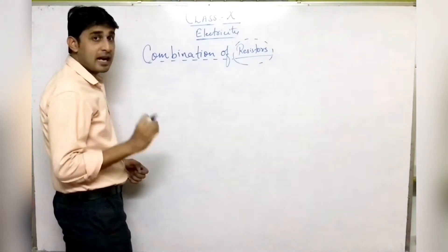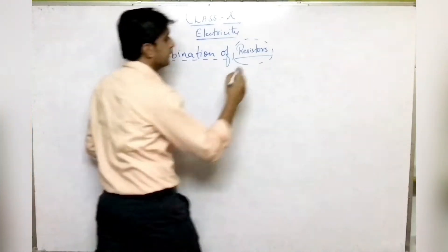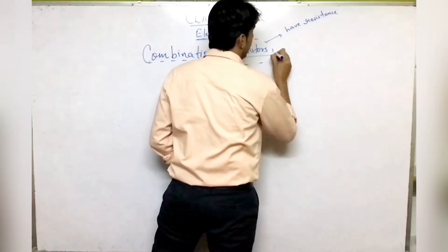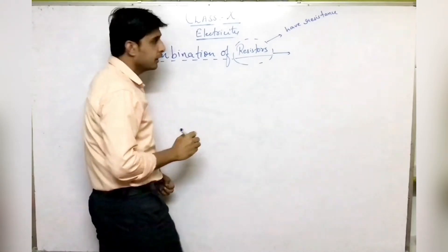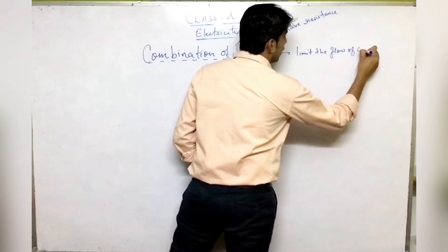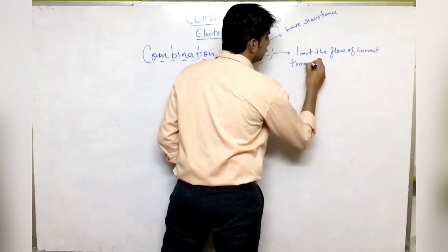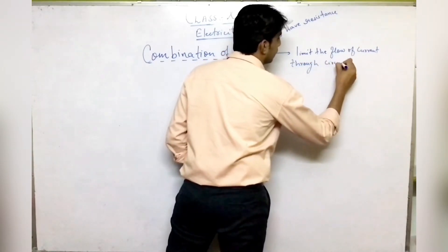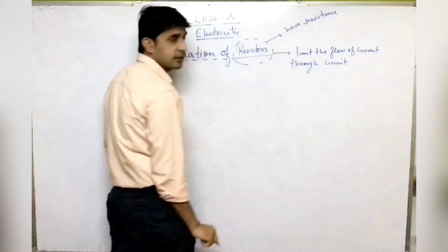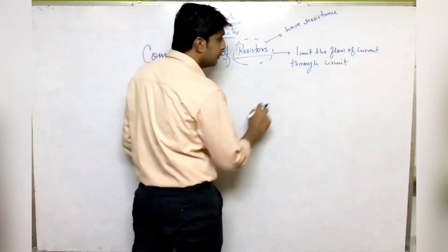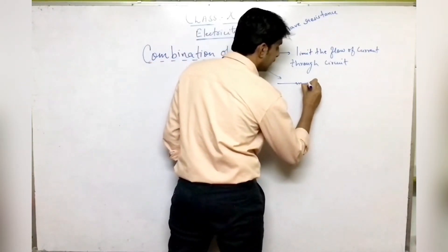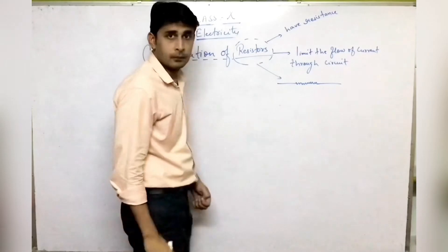What are resistors? Resistors are electrical components which have resistance, and whose primary function is to limit the flow of current through a circuit. The symbolic representation of a resistor is the same as that of resistance — a zigzag line.